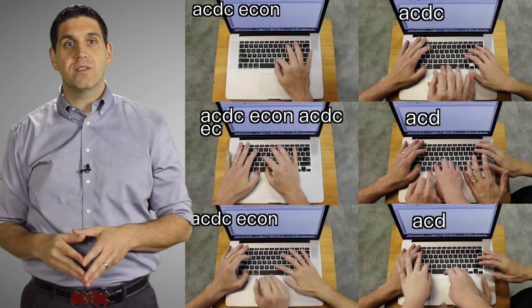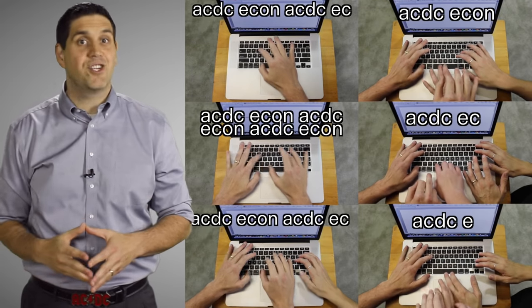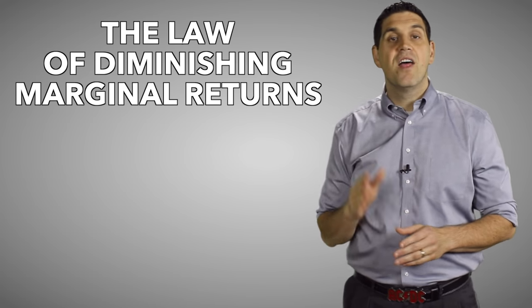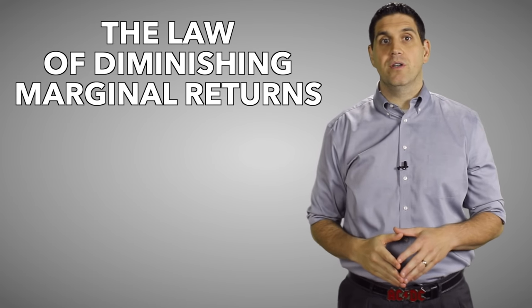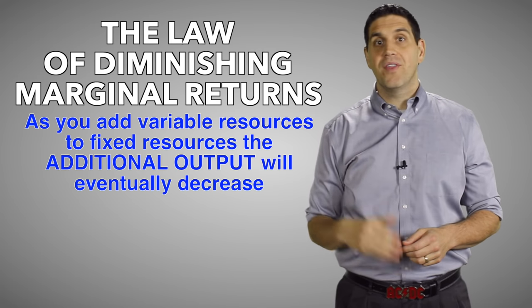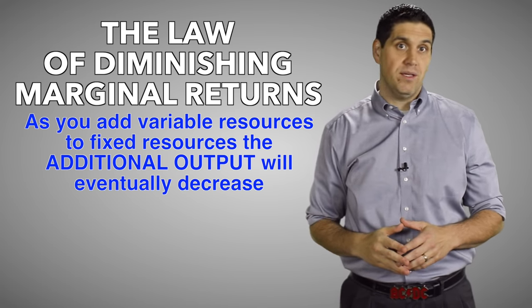As you add more and more variable resources, eventually you're going to get less and less additional output. This is the idea of one of the most important concepts in economics, the law of diminishing marginal returns. As you continue to add variable resources to fixed resources, the additional output will eventually decrease. Notice that I said it will eventually decrease. It can increase because of specialization, but as you keep hiring more and more workers, eventually you get less and less output.